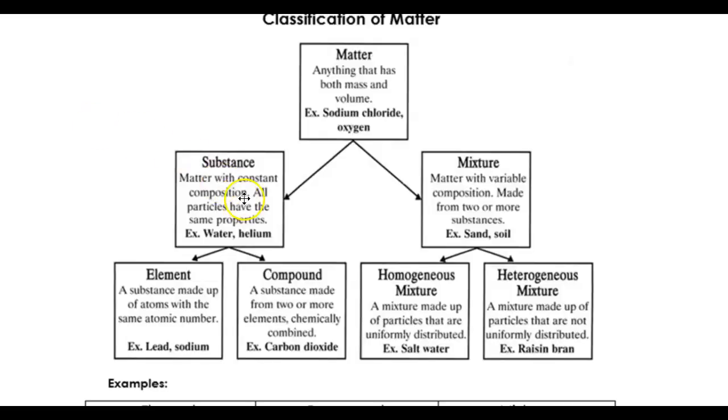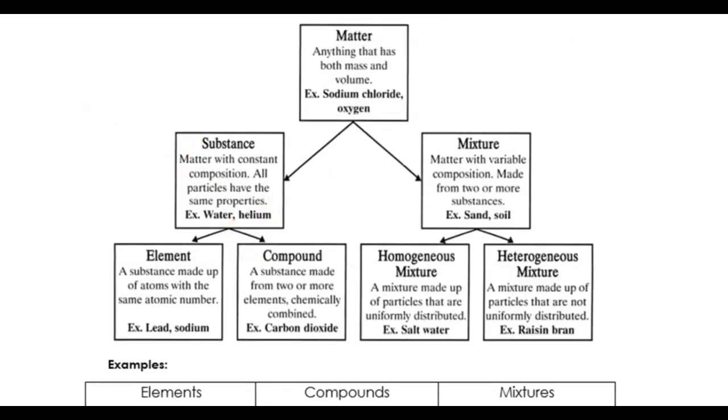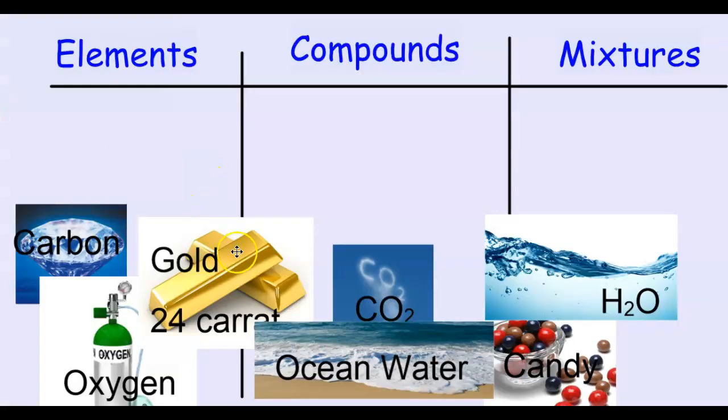Let's see if we can classify some common items. Your page looks something like this, but I'm going to do it here so it's a little more visually impressive. Remember what elements are - elements are pure materials made of one type of atom. Compounds are chemical combinations of those elements that make a new material, and mixtures are just combinations of those things.